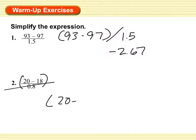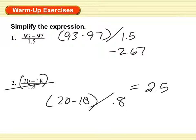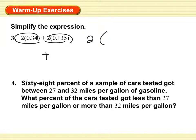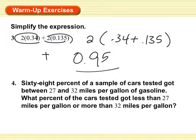So 20 minus 18 divide by 0.8 is how you would type it in. And here you get an answer of 2.5. You can do the multiplication first and then add, or you can do the addition and then multiply. It doesn't matter — you're going to get the same answer, and the answer is actually going to be 0.95.